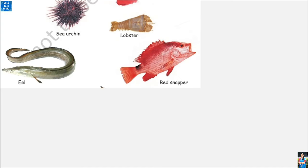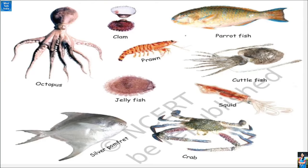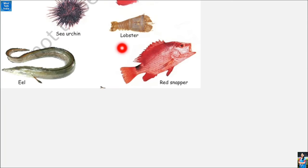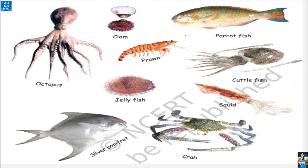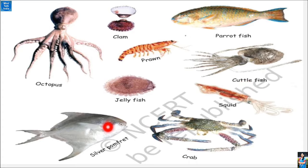In the next activity, you can make many types of shapes and try to make a fish. On the next page, you have many different kinds of sea creatures: lobster, eel fish, red snapper, octopus, prawn, parrot fish, cuttlefish, jellyfish, pomfret, crab, and squid.